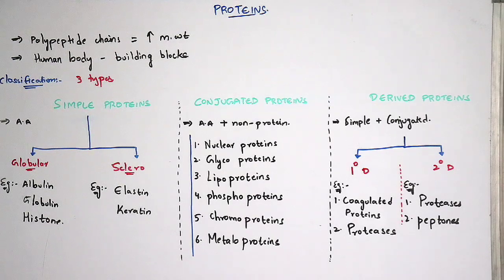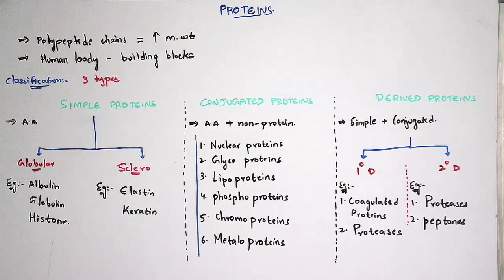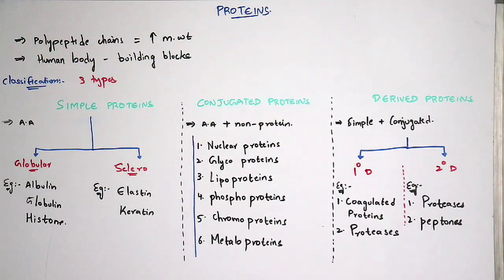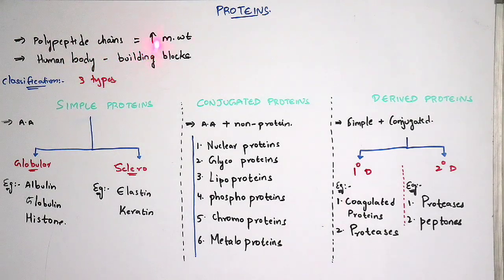So what is meant by proteins? Normally, proteins consist of numerous polypeptide chains. Because they consist of numerous polypeptide chains, the molecular weight of a protein is also more. These proteins are found in human bodies and act as the building blocks of the human body.